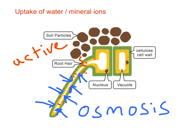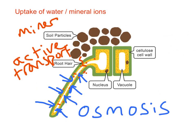Either way, the root hair increases the surface area — whether for water to get in by osmosis or for mineral ions to get in by active transport. Whichever way you look at it, the root hair cell is doing its job: increasing the surface area for transfer of water or mineral ions.